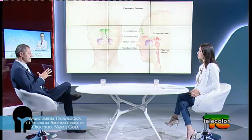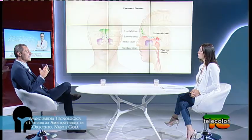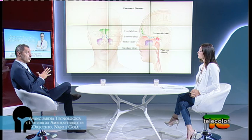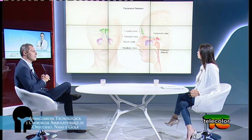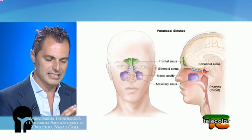La sinusite cronica deriva, nella stragrande maggioranza dei casi, da una patologia ostruttiva a livello del naso. L'anatomia del massiccio facciale è come un grande appartamento dove esistono molte stanze. L'accesso di questo appartamento è rappresentato dalle fosse nasali, la fossa destra e la fossa sinistra.